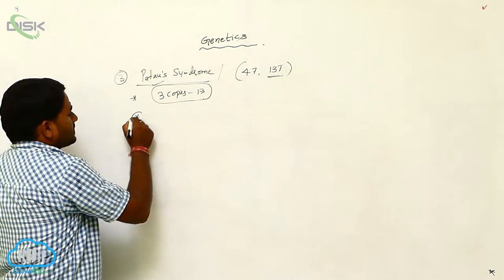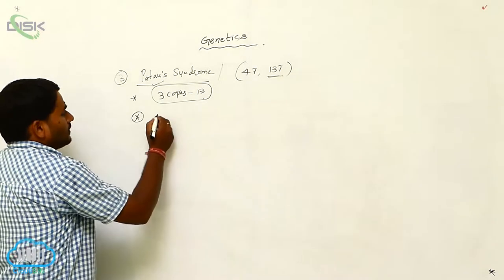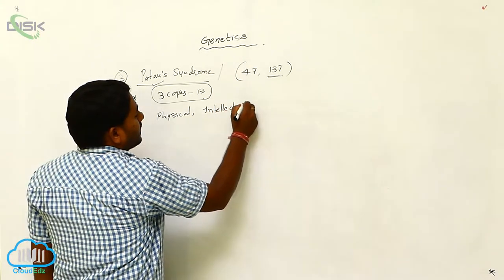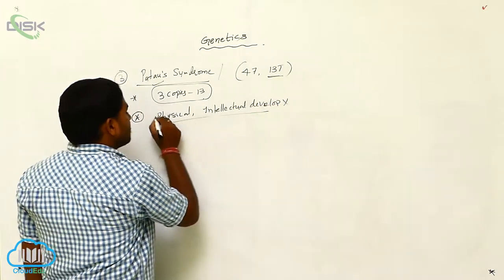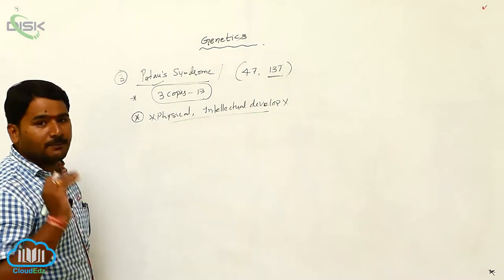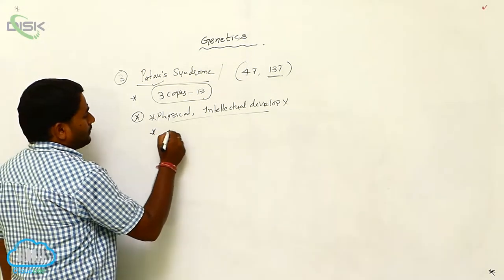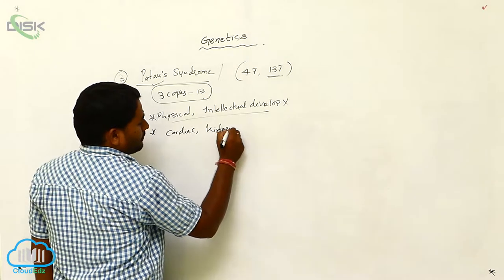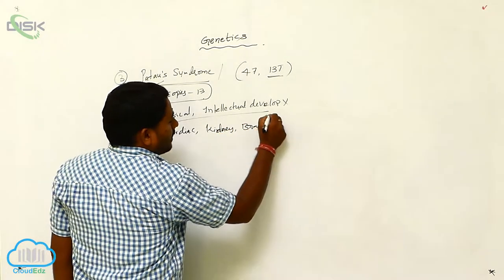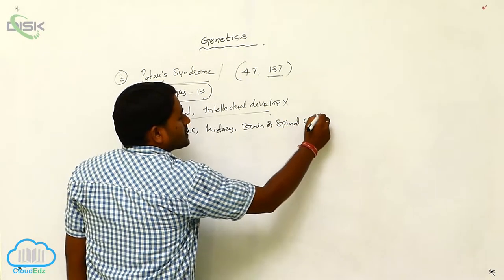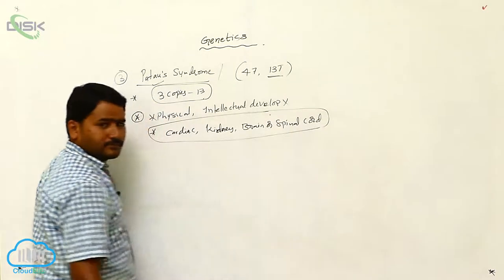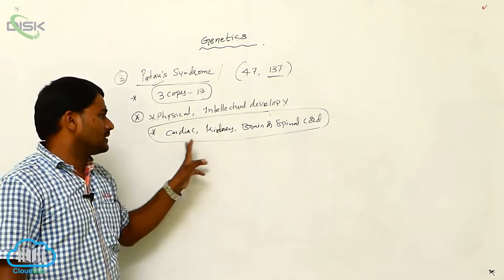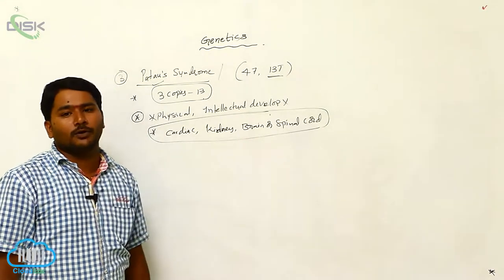Looking at the symptoms of Patau syndrome: physical and intellectual development is absent in the individual. They also have cardiac problems, kidney problems, and brain or spinal cord abnormalities.